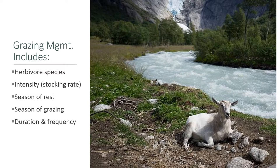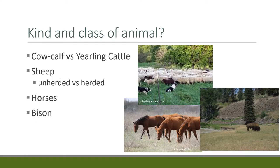The things we can manage to affect riparian grazing systems include: species or kind of animal, intensity or stocking rate, season of rest and season of grazing, and duration or frequency of grazing. Cow-calf operations are generally considered harder on the landscape — older cows tend to use riparian areas more when they have calves, compared to yearling cattle that explore more. Sheep are usually superior to cattle in terms of riparian impacts, and herded sheep have lower impacts than unherded sheep. Horses and bison are both considered relatively hard on riparian areas and can cause fairly severe impacts.